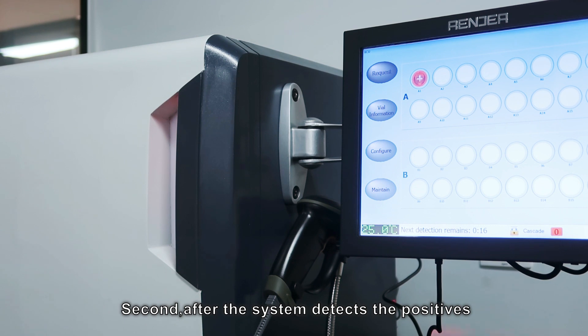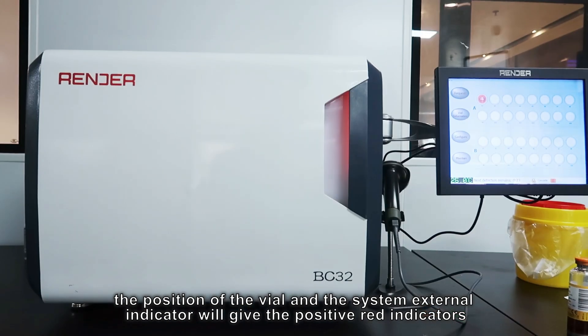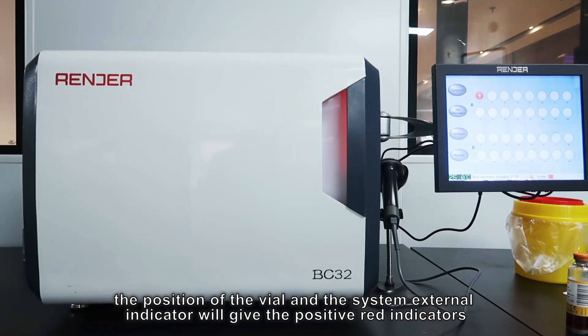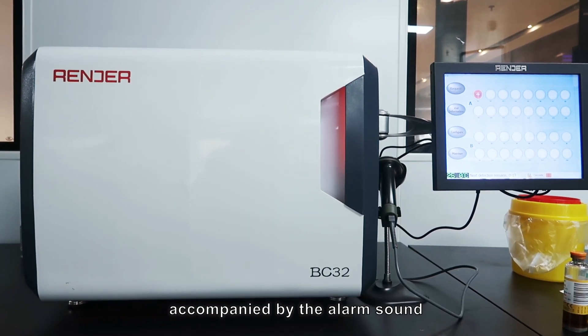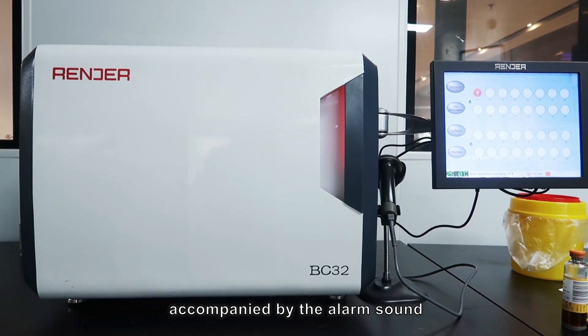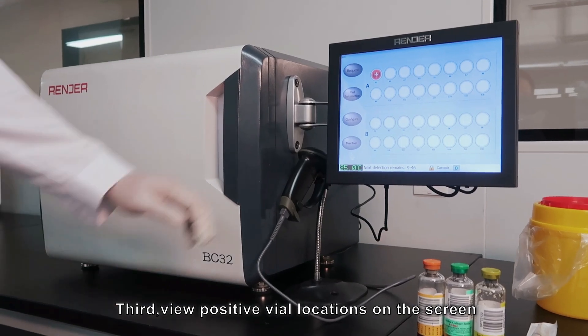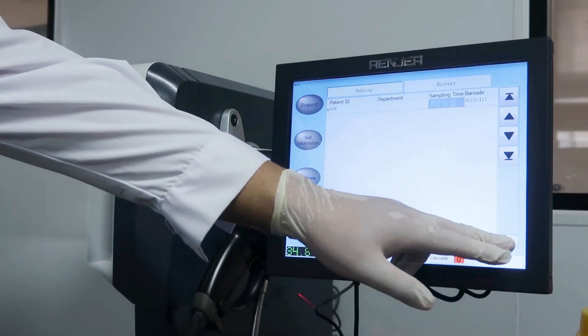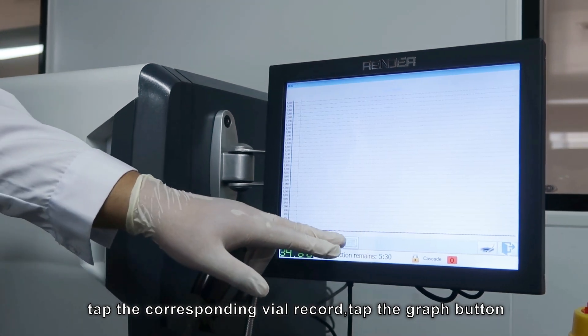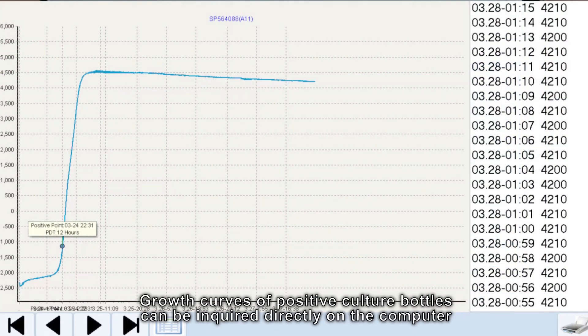Second, after the system detects the positives, the position indicator and the system external indicator will give the positive red indicators, accompanied by the alarm sound. Third, view positive bottle locations on the screen. Click the bottle information button on the left side of the screen. Click the corresponding bottle records. Click the graph button. Growth curves of positive culture bottles can be inquired directly on the computer.